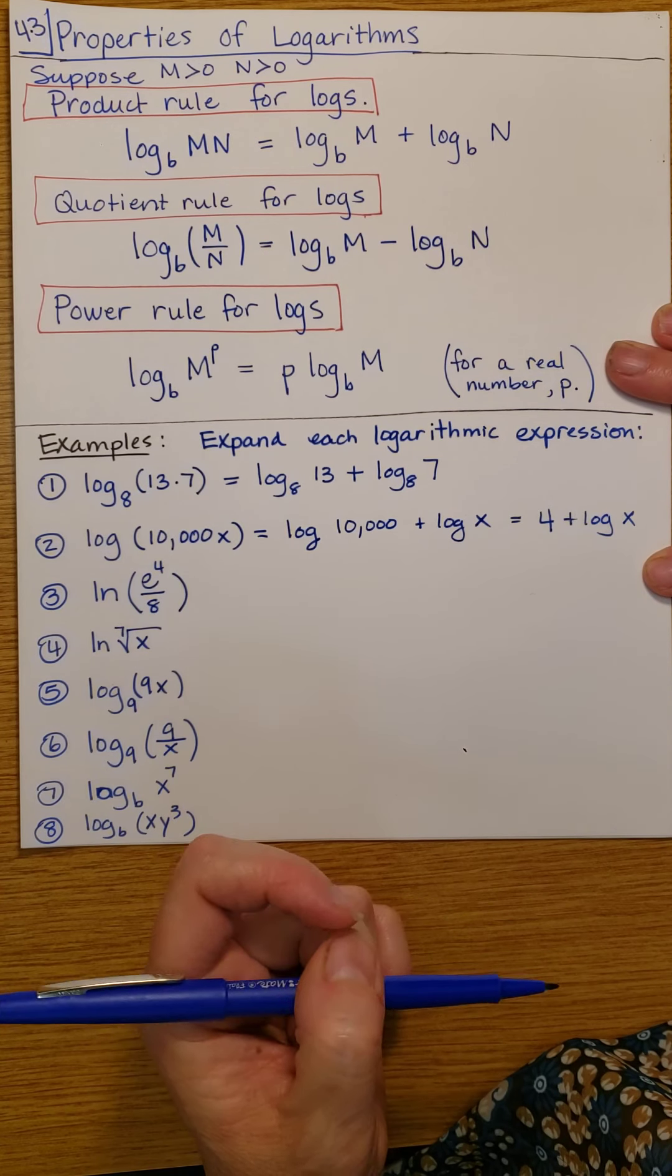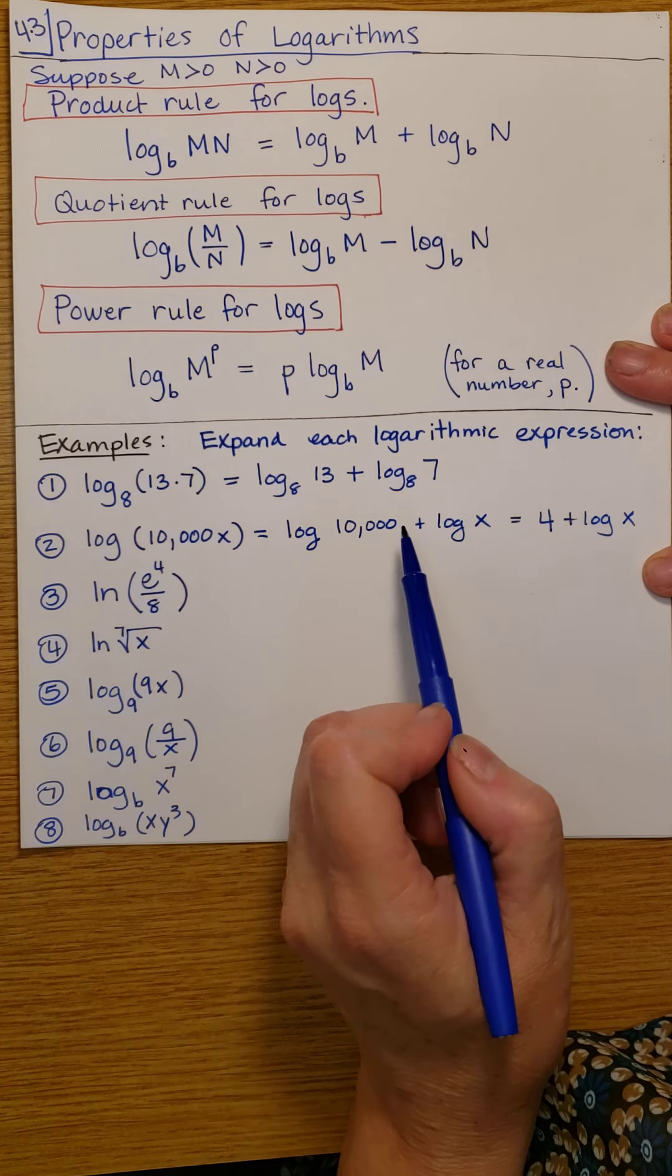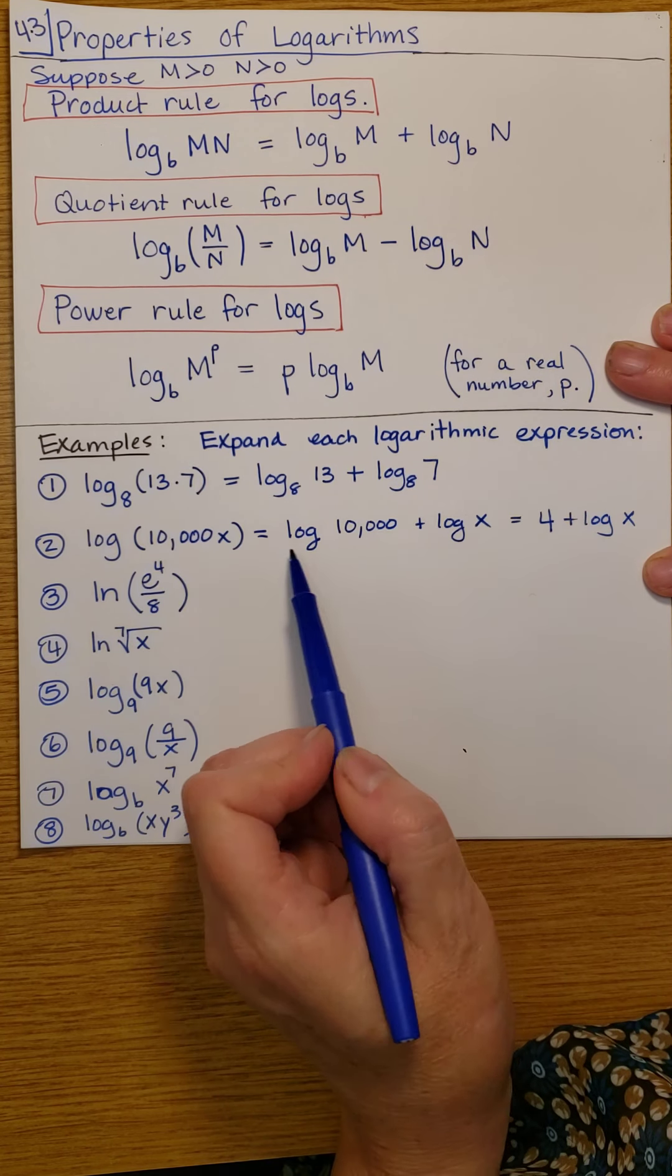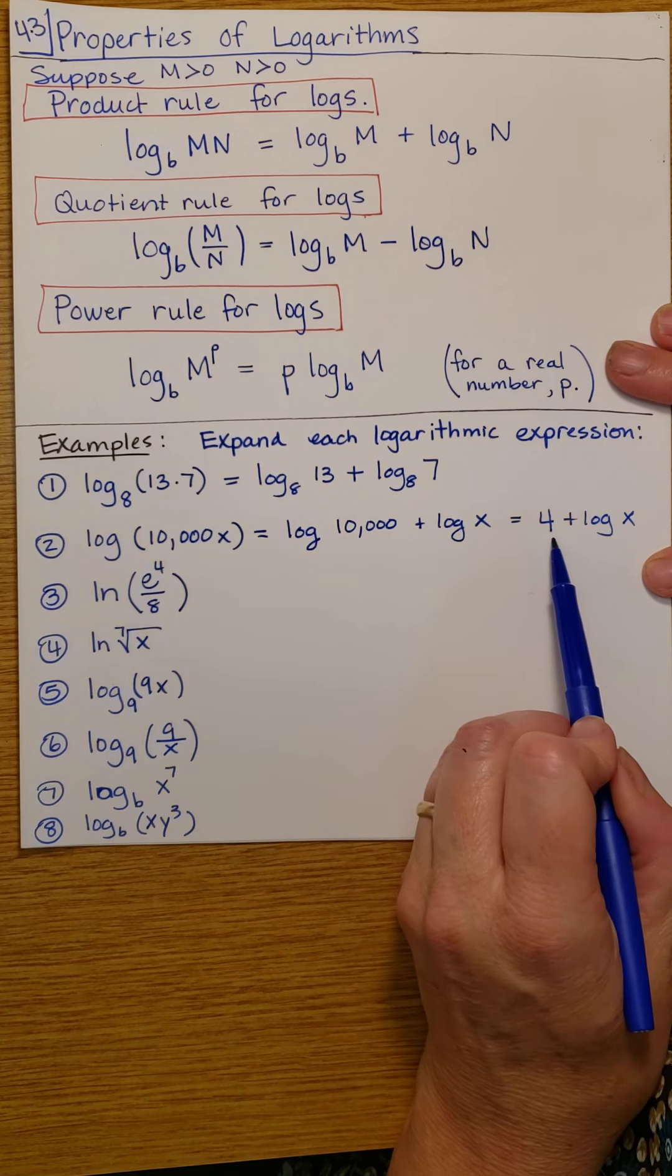Because remember, the log is the exponent. Here the base is 10. The exponent that gives us 10,000 is 4. And so since the log is the exponent, I'm just writing the exponent there, 4.